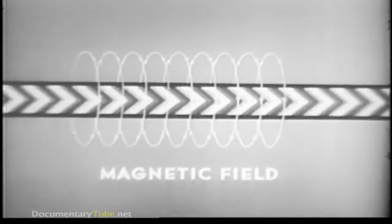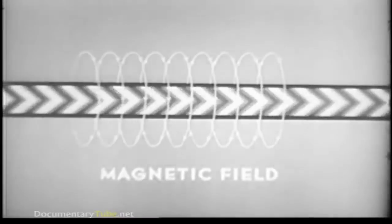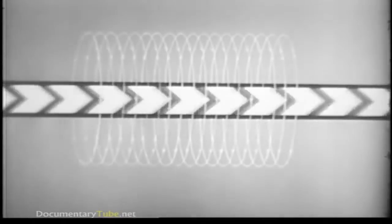But why does the armature rotate when current reaches the starting motor? The answer lies in the relationship that exists between magnetism and electricity. Remember, when current flows along a conductor, a field is produced around the conductor, similar to the field around a bar magnet. And the stronger the current, the stronger the field.